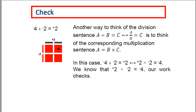Let's check our work. Another way to think of the division sentence, a divided by b equals c, is to think of the corresponding multiplication sentence, a equals b times c. In this case, negative 4 divided by negative 2 equals positive 2 is equivalent to positive 2 times negative 2 equals negative 4. We know that positive 2 times negative 2 equals negative 4, so our work checks.